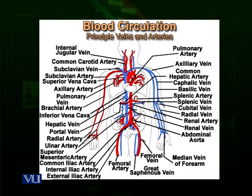Now we talk about the veins. Veins have to return blood to the heart. We divide them into two parts: from the upper parts of the body — head, neck, shoulders, and arms — and from the lower part — legs and lower organs. From the head, there is a jugular vein, which returns blood from the head and neck region. There are two major veins returning blood to the heart: the superior vena cava and the inferior vena cava. The superior vena cava returns blood from the head, neck, shoulders, and arms back to the heart.